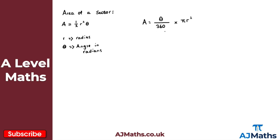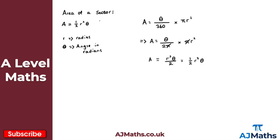What I can do now is replace this 360 degrees with two pi radians. In that case, what we get for the area of this sector is theta over two pi, and then we multiply that by pi r squared. We simplify: this pi cancels with this pi, and what we get is theta times r squared all divided by two, so A is equal to r squared theta over two.